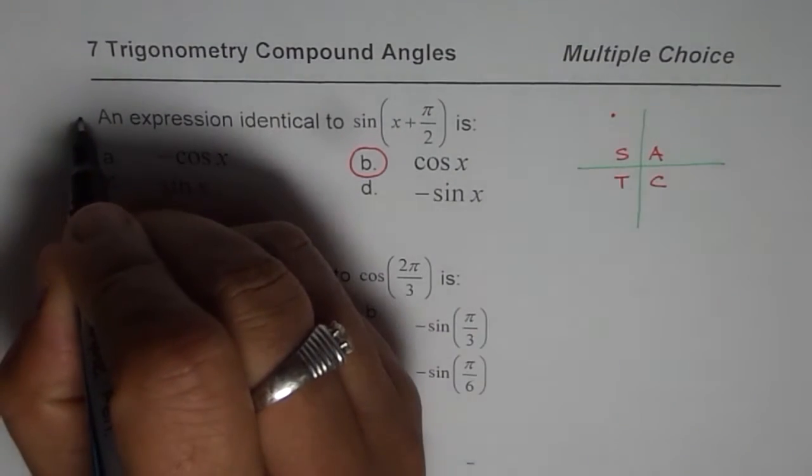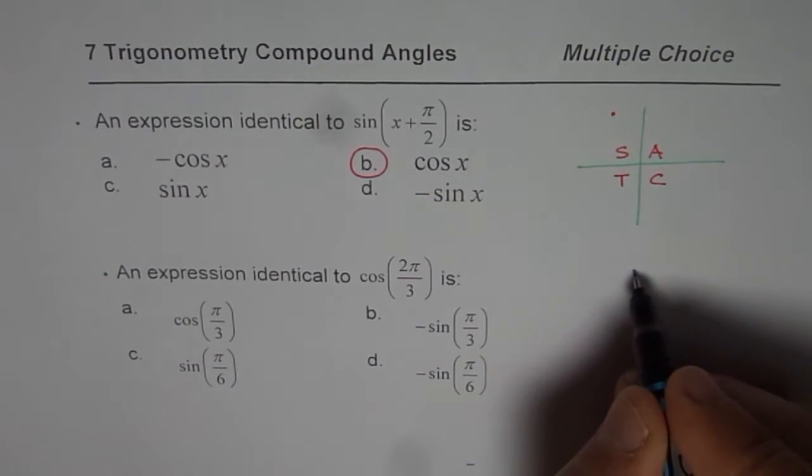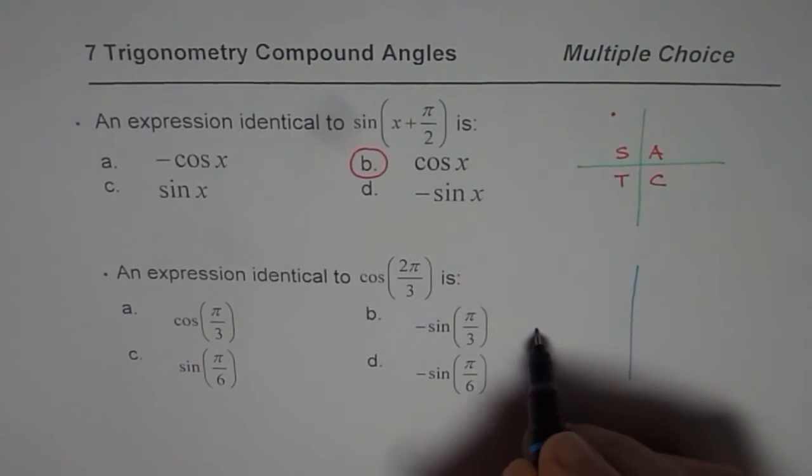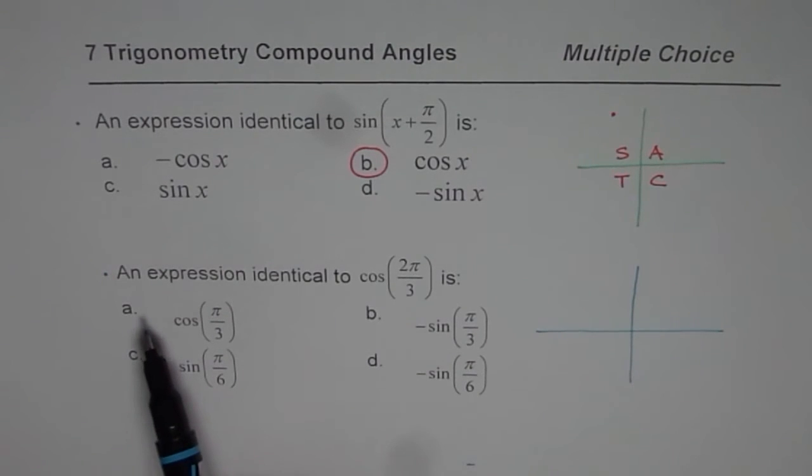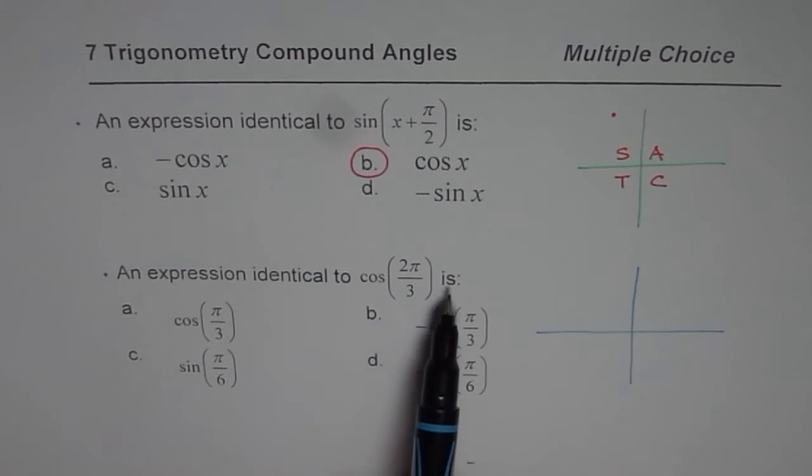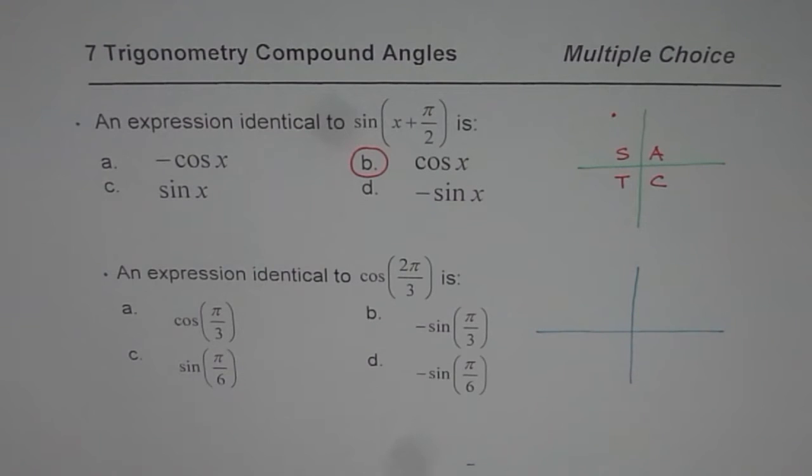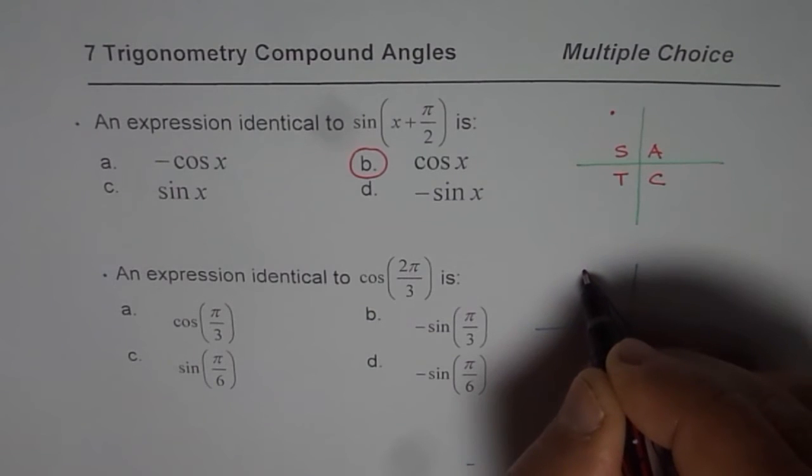Now I have added one more question to this which is similar but relates with co-function, because at times I have seen a similar question which students don't get easily. Now this one is an expression identical to cos(2π/3) is what?